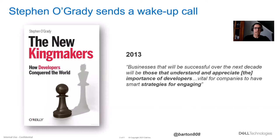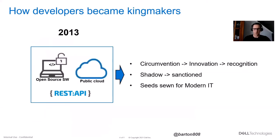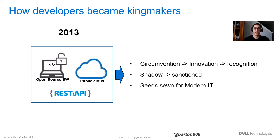Here's some help in putting together that engagement strategy. But first, let me give you a quick walkthrough of how developers came to power. In 2013, what led up to it was open source, public cloud, and REST APIs — all things that developers picked themselves and started working on outside of regular IT. By using the cloud and open source, they were able to circumvent operations, which led to greater innovation and productivity, recognized by the business. And what started as shadow IT then became sanctioned, serving as the foundation for modern IT.